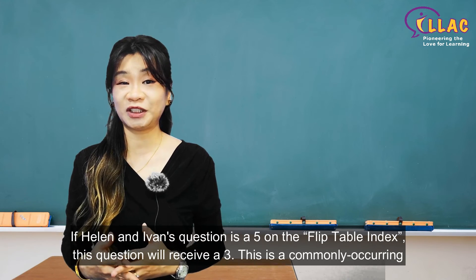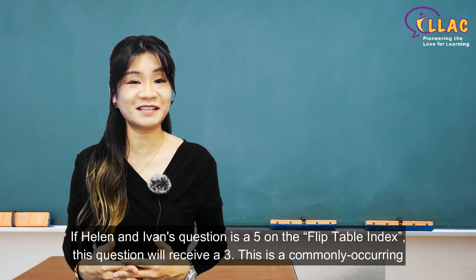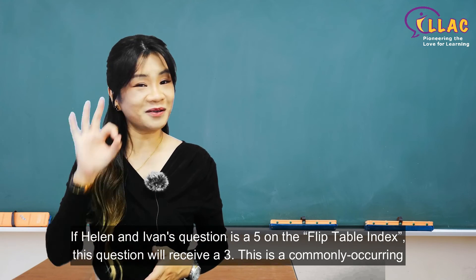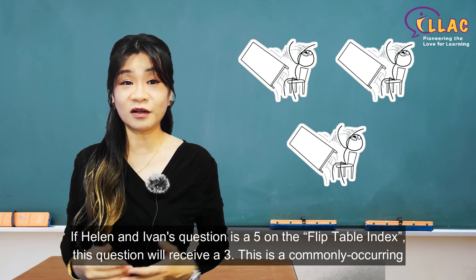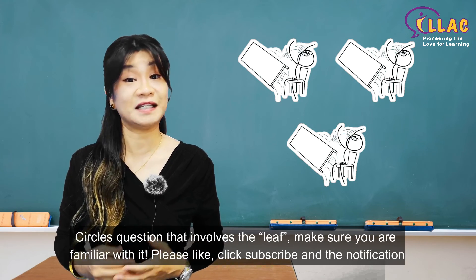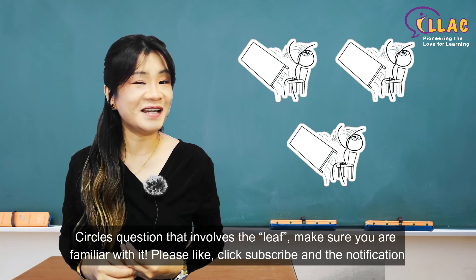If Helen and Ivan's question is a 5 on the flip table index, this question will receive a 3. This is a commonly occurring circles question that involves the leaf. Make sure you are familiar with it.